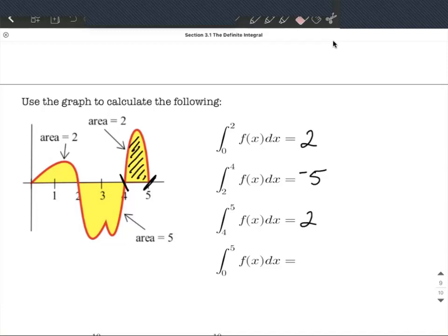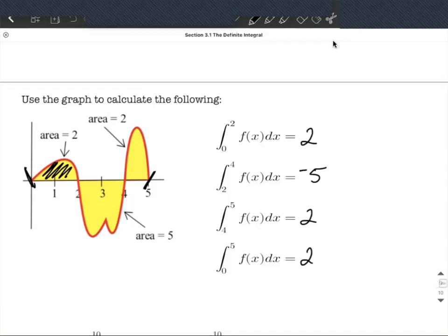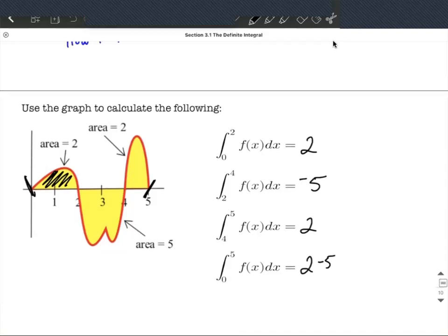The last one, putting it all together. We go from 0 to 5. In this case, we have positive 2 for that first section, negative 5 for this middle section, and then positive 2 again for that last piece because we're told that has an area of 2. Combining these all together, we get negative 1 for the definite integral from 0 to 5 of f(x).